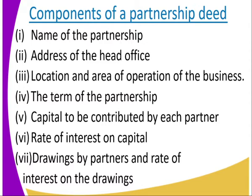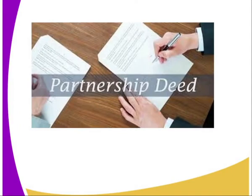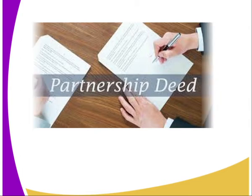Number seven, drawings from partners and the rate of interest on the drawings. If a partner decides to withdraw from the partnership, what interest is that person going to get? You can see the partnership deed — it is the agreement with all the writings of what they are supposed to do. Then they agree and sign.